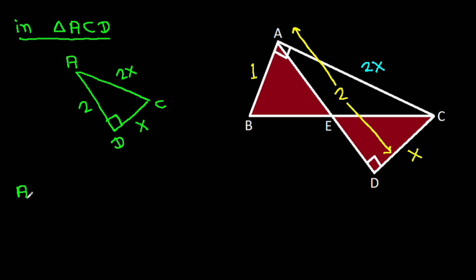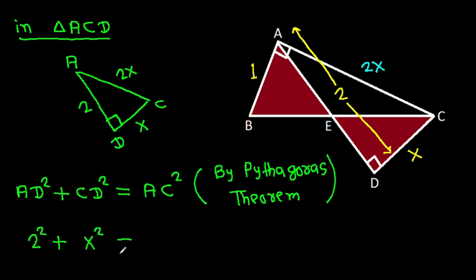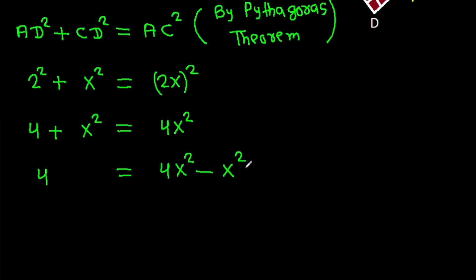By the Pythagorean theorem, AD squared plus CD squared equals AC squared. Substituting: 2 squared plus X squared equals 2X squared, which gives 4 plus X squared equals 4X squared. Rearranging, 4 equals 4X squared minus X squared, so 4 equals 3X squared.